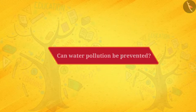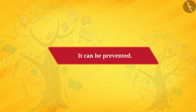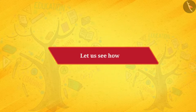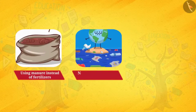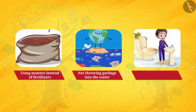Can water pollution be prevented? Yes, it can be! Water pollution can be prevented by using manure instead of fertilizers, by not throwing garbage into the water, and by not throwing chemicals into the sink or toilet.